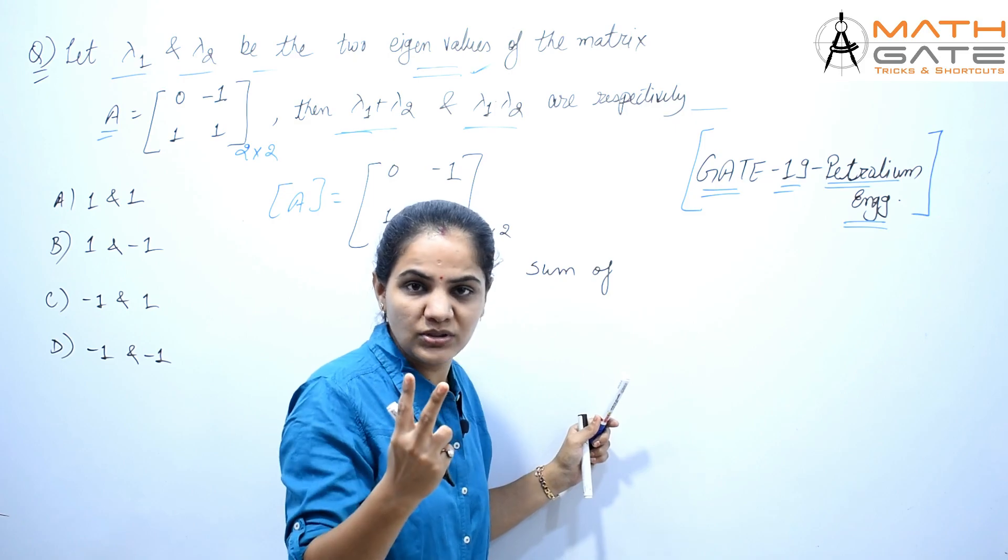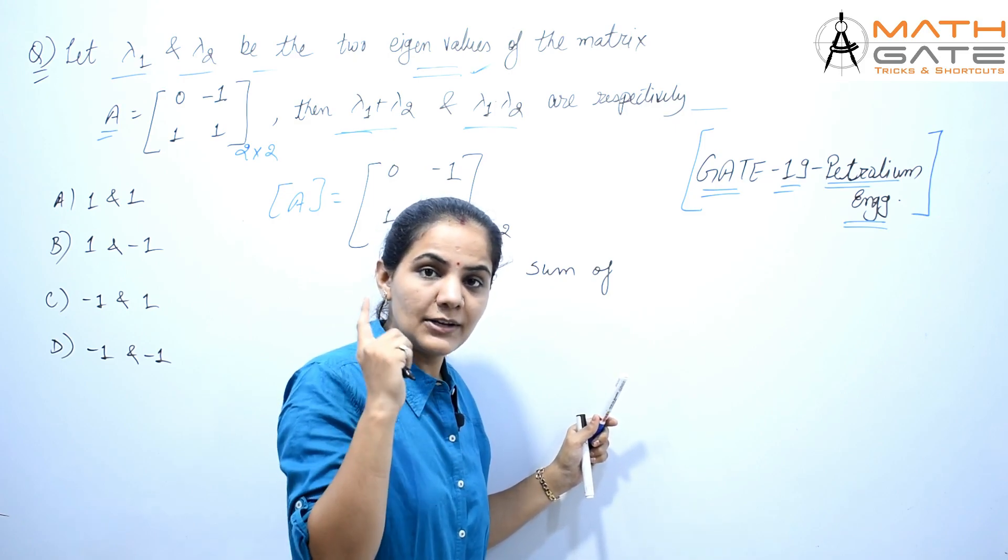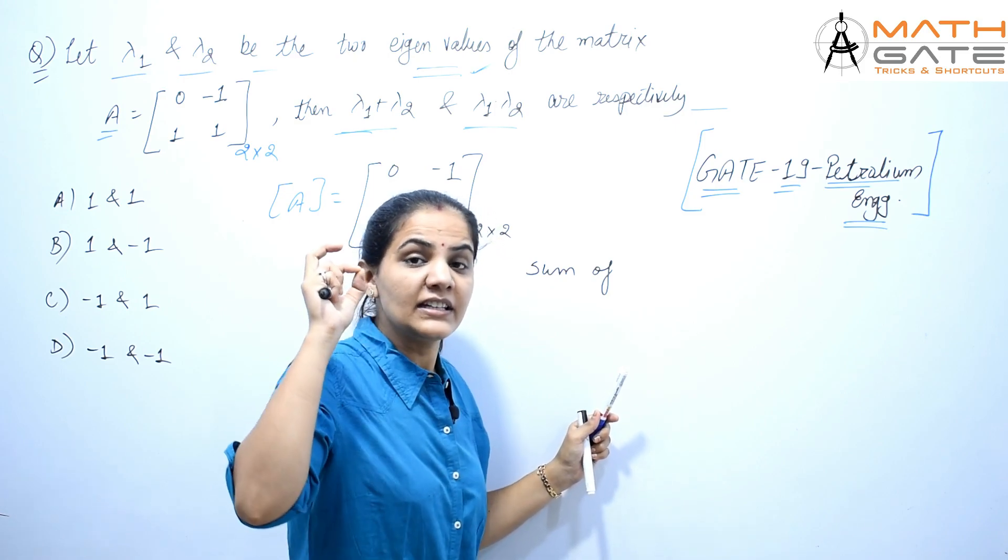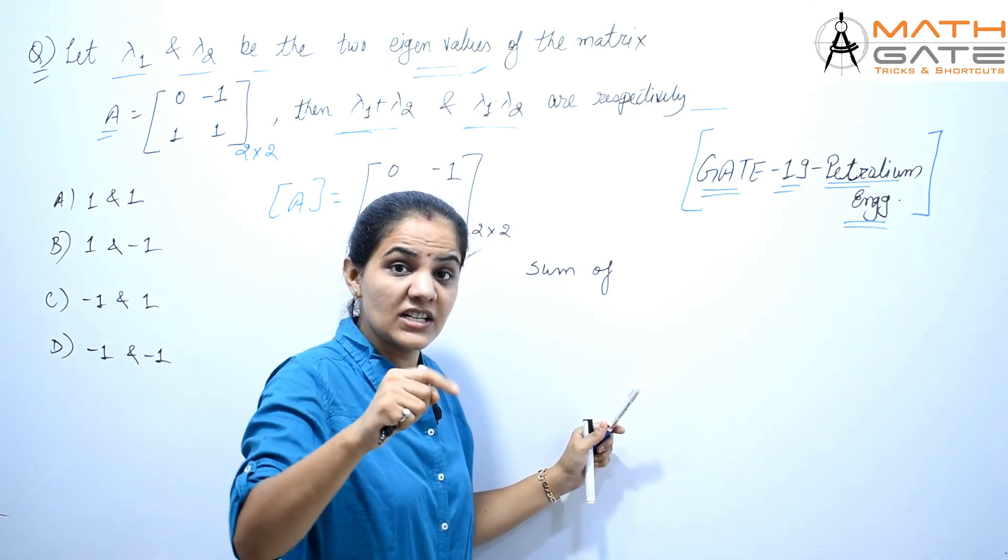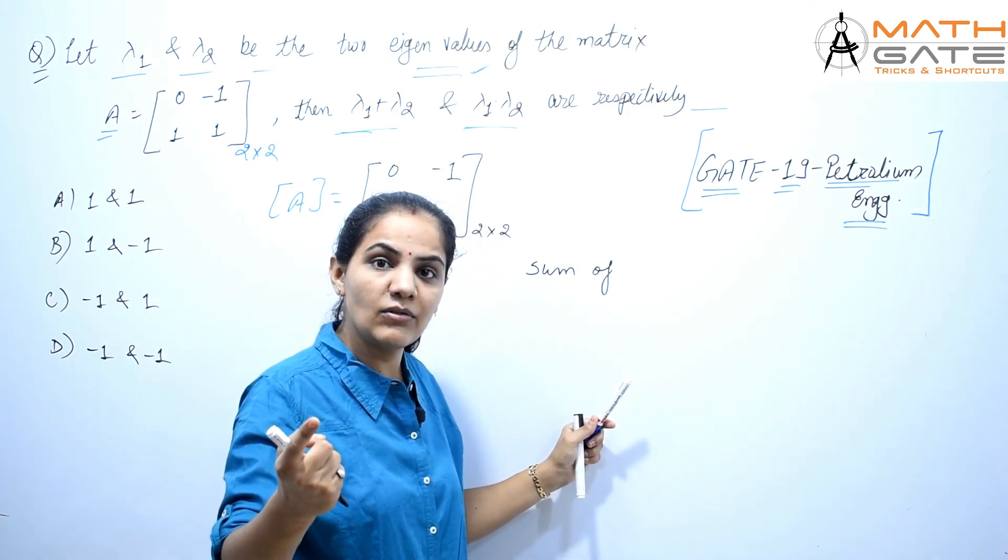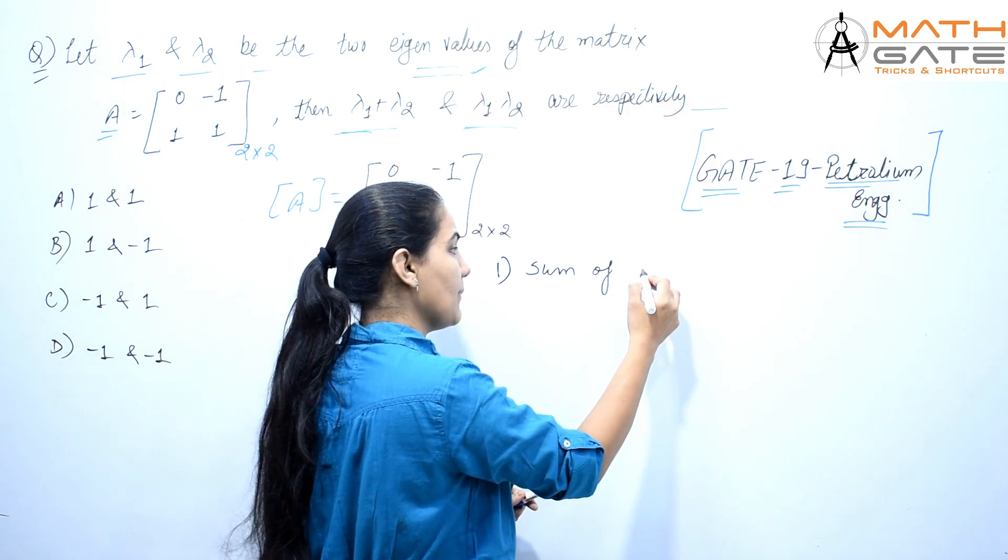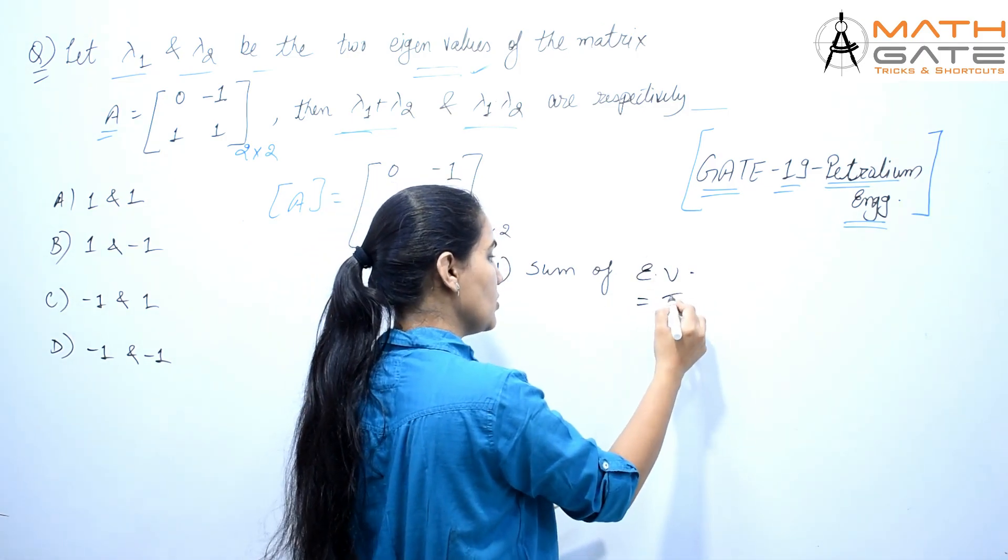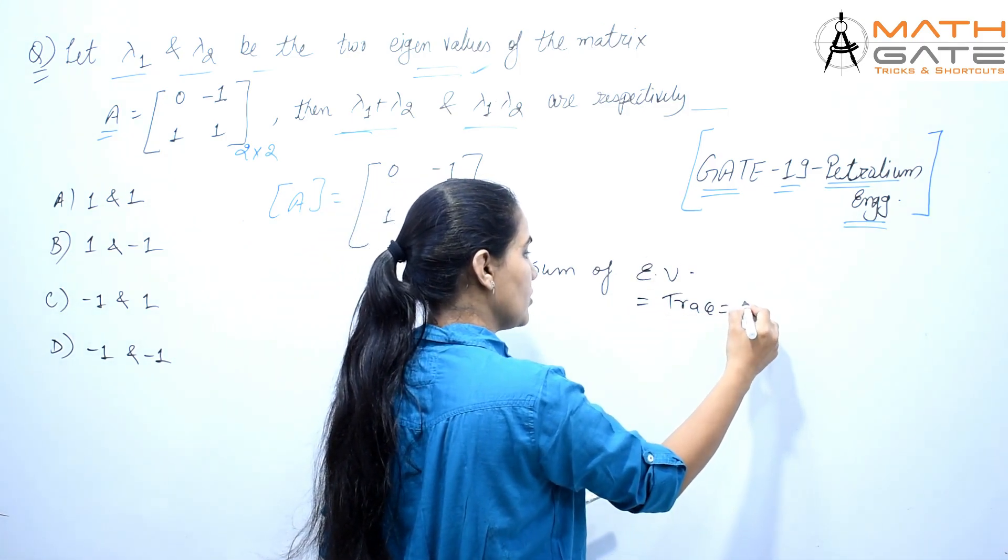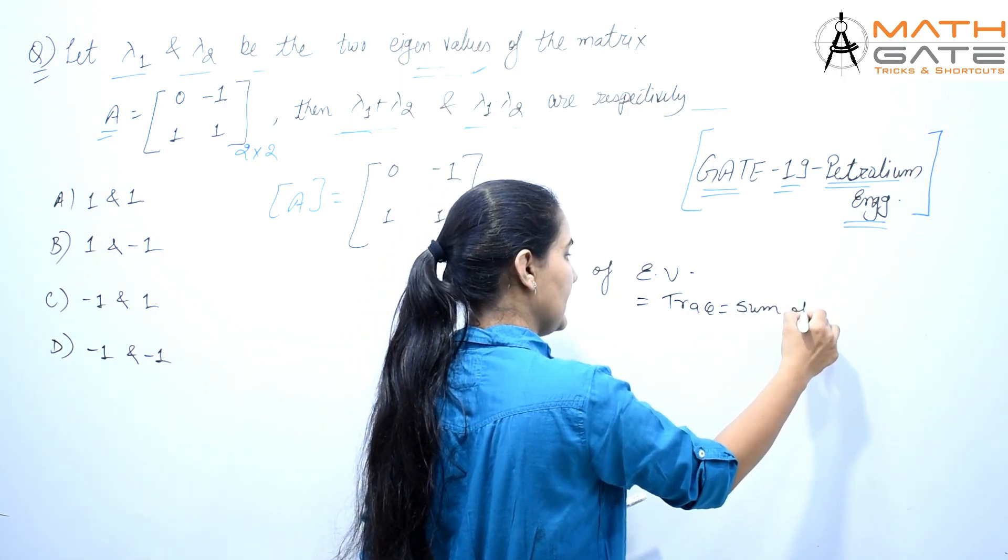The first thing you have to do is find out: sum of eigenvalues is equal to trace, which is equal to sum of principal diagonal elements.